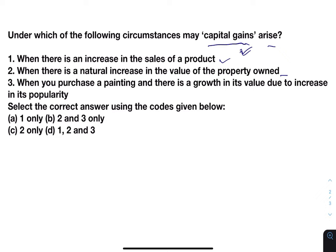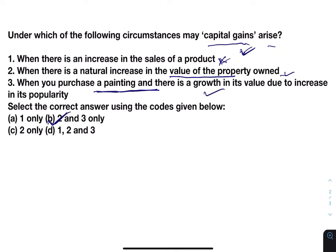Capital gains was again in news because the government included gains from crypto as capital gains, and capital gains tax is now applicable on that. Capital gain is when the value of your asset increases and is realized when somebody sells that property or asset — then gains are realized and tax is applicable. So when there is an increase in the sales of a product, it is not the correct option. Natural increase in the value of property owned — true. When the value of a painting increases — yes. So the answer will be two and three.